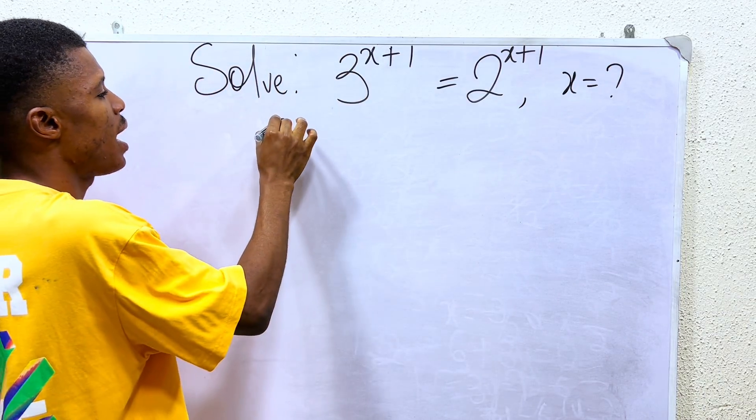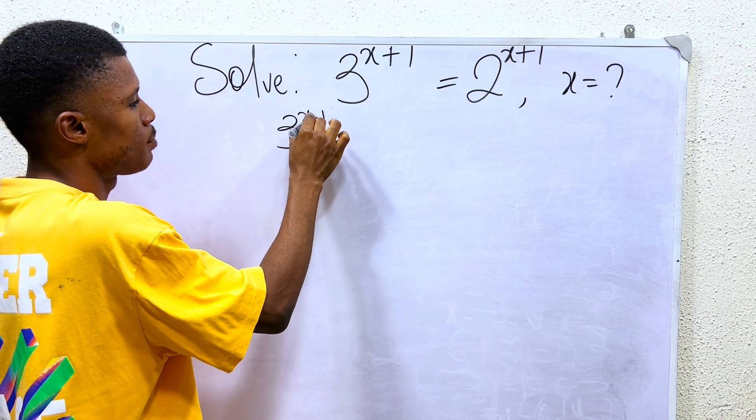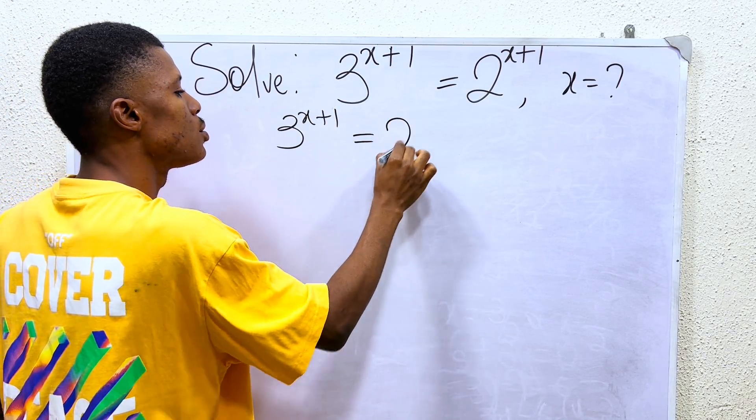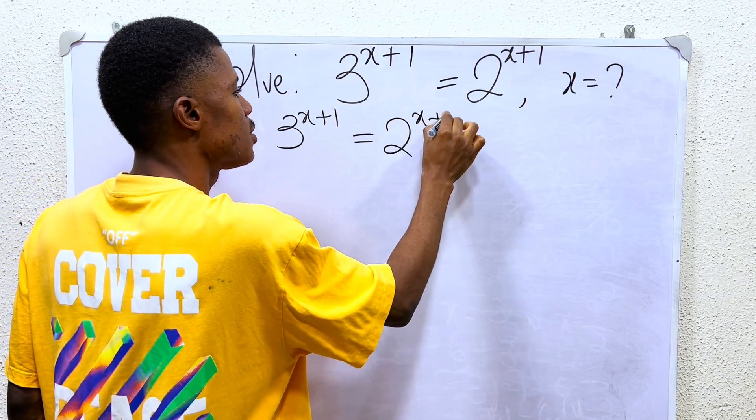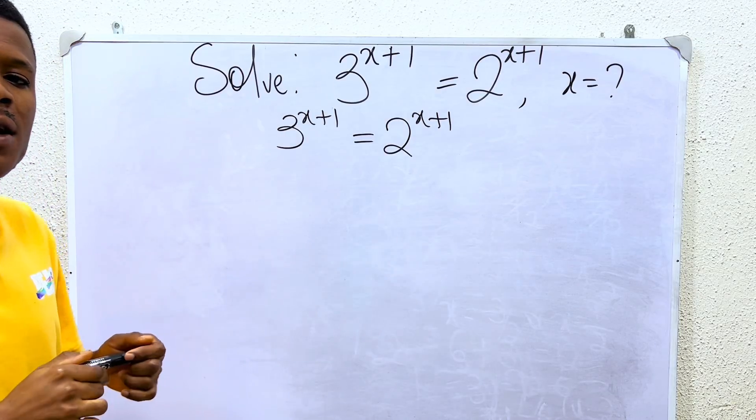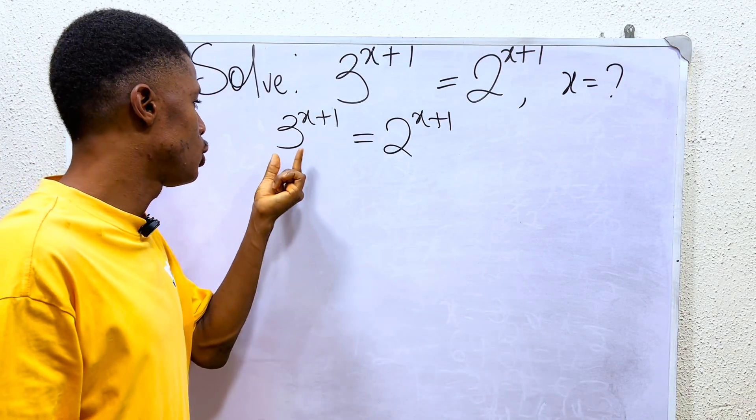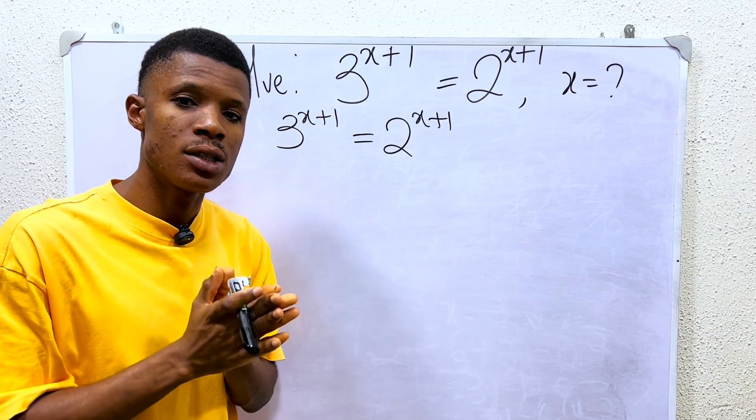So do you know the first thing we do? We have 3^(x+1) = 2^(x+1). To find the value of x, you know that 3 and 2 cannot be expressed in common base.